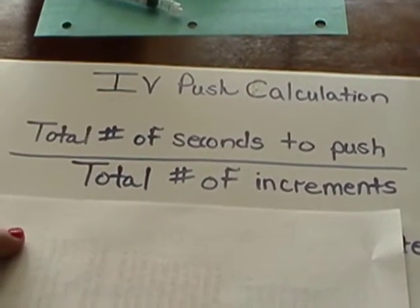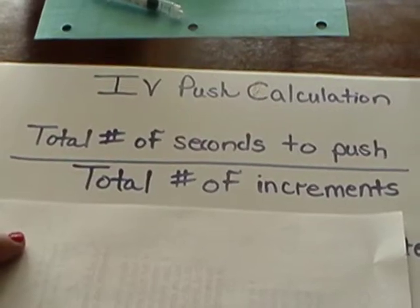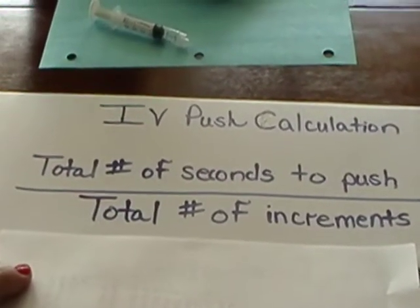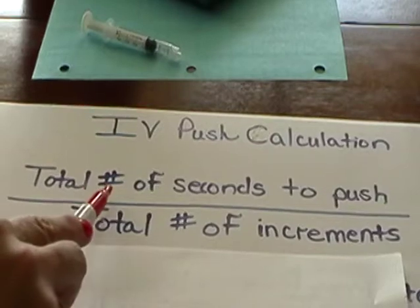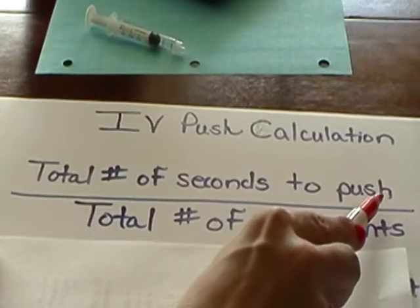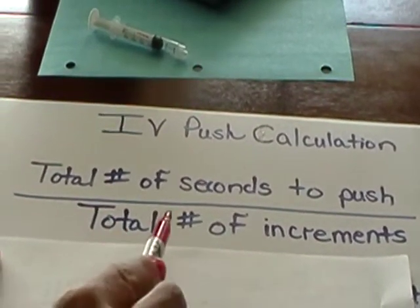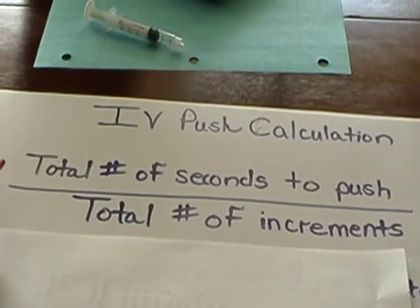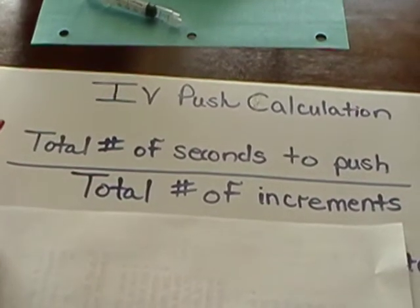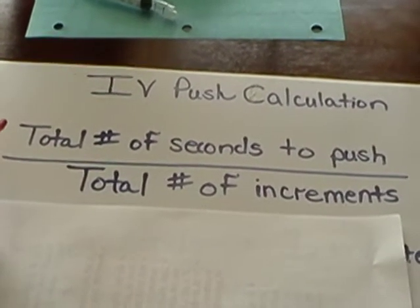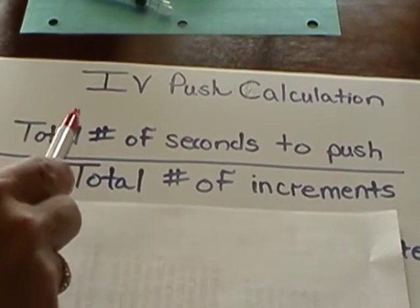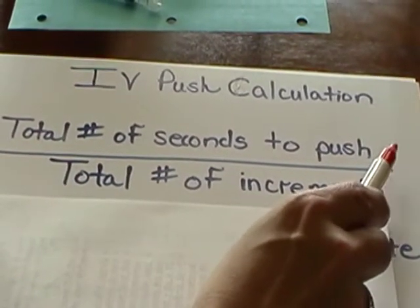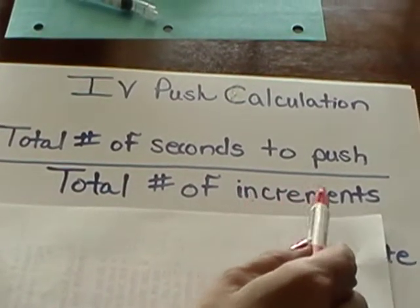Now we're ready to focus on calculating IV push medication administration. For IV push calculation we have a new formula: total number of seconds to push the medication over, divided by the total number of increments. This is the only time with IV push calculations that your volume does not go on the top. Your time — total number of seconds to be pushed over — is your numerator, and total number of increments is your denominator.